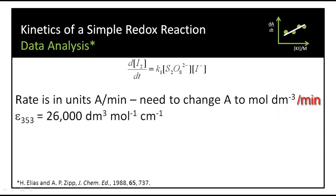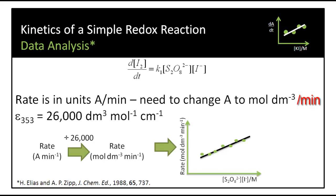To calculate K1, we need to change the units from absorbance per minute into moles per dm³ per minute. We do this using the extinction coefficient, which is 26,000 dm³ per mole per centimeter. We divide our rate from the graph by 26,000 to give us the correct units, and then plot those rates against the product of the concentrations, which gives us a slope of K1.